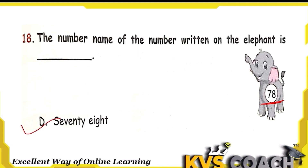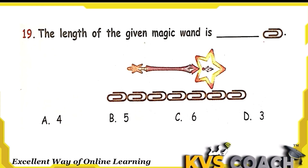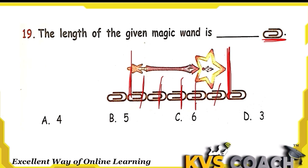The next question: the length of the given magic wand is measured using pins. The magic wand starts at one pin and ends at another. Counting the pins: 1, 2, 3, 4, and 5. There are 5 pins, so the length of the magic wand is 5. Option B is the right answer.